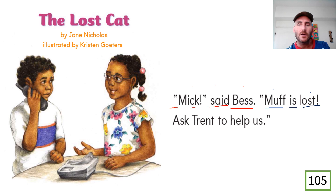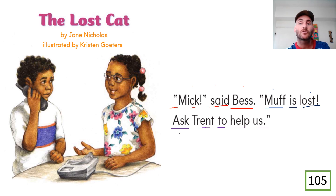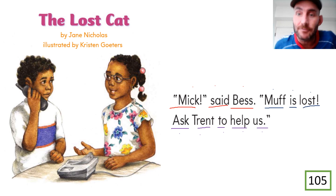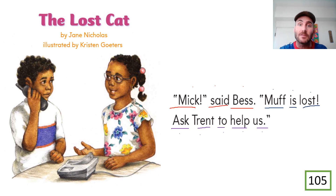Super. Now I want you to do the same for sentence number three — you read first, and then we read together. Let's read together — ask Trent to help us. Super. So guys, we've read that page: the cat is gone, Muff is the cat's name, and Muff is lost. So these two people, Mick and Bess, are going to phone their friend Trent to help them find Muff the cat.